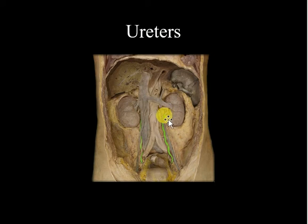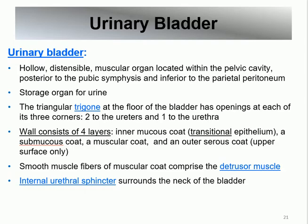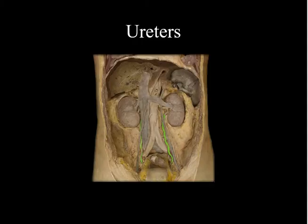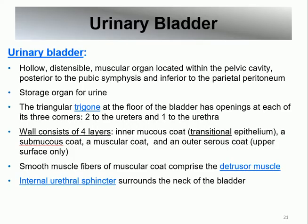The ureters start from the renal pelvis and travel to the bladder. Where the ureter enters the bladder, the last part is slit-like, and the bladder muscles compress this end to form a functional valve or sphincter, preventing urine from flowing backward (vesicoureteral reflux) from the bladder back into the ureter.